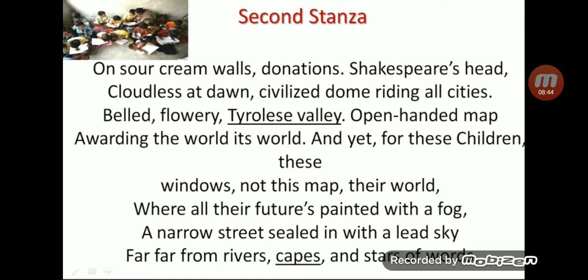'Shakespeare's head, cloudless at dawn, civilized dome riding all cities' — this is metonymy. Shakespeare's head on the wall represents the civilized society, but the words 'civilized society' or 'modern society' are not directly mentioned in the poem. The hints — Shakespeare's head, civilized dome, cities — all point toward it, making it metonymy.